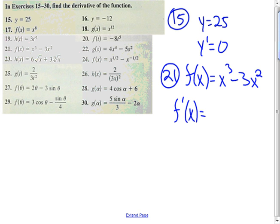Using the power rule, the derivative of x cubed is 3x squared, and again, using the power rule, the derivative of minus 3x squared would be minus 6x.